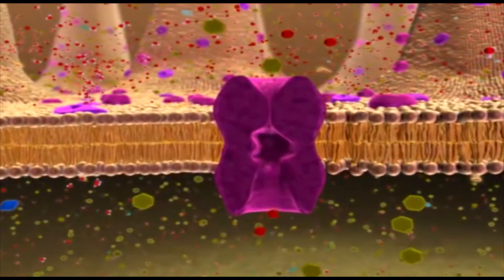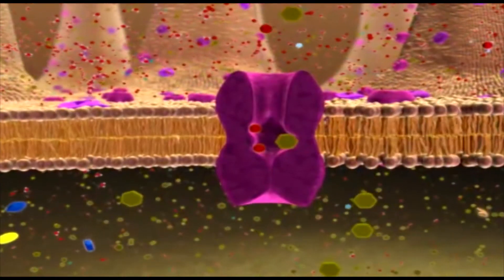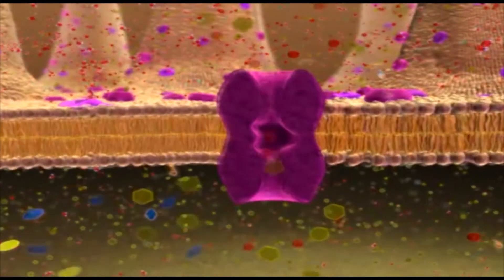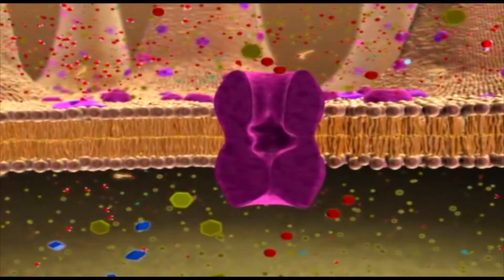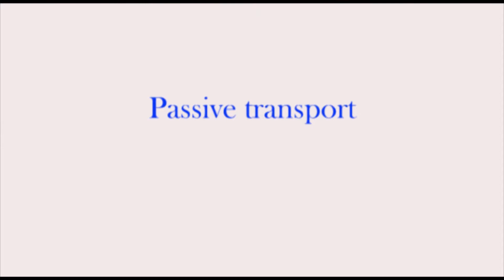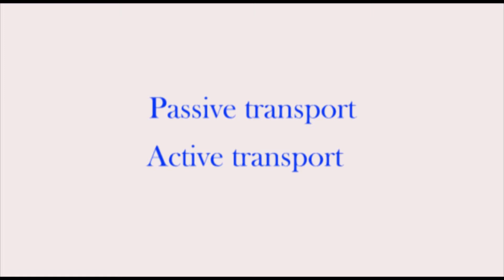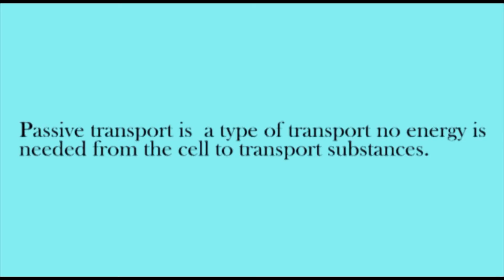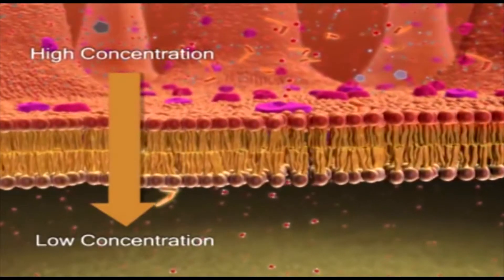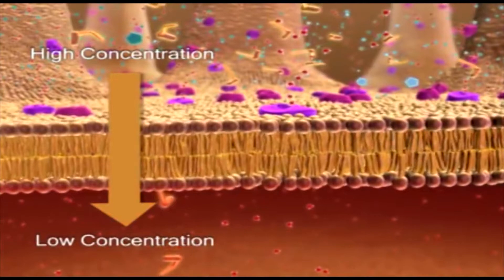Dissolved substances move into and out of the cell across the cell membrane by different transport mechanisms. The transport mechanisms can be either passive transport or active transport. Passive transport is a type of transport where no energy is needed from the cell to transport substances. No energy is required because substances are moving from their high concentration to their low concentration.